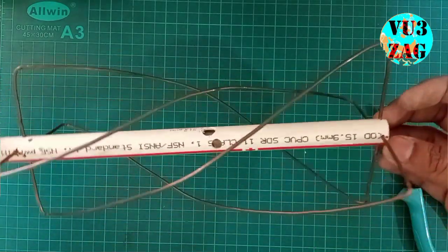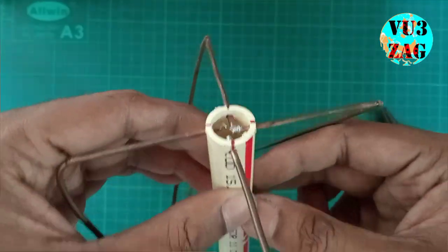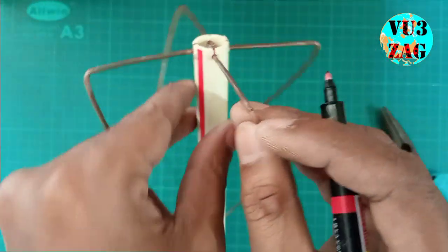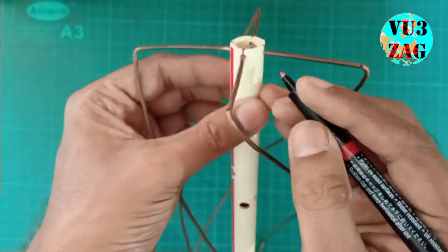Now let's solder a coaxial cable to this antenna. Before that, I will be marking the loops and giving the name A and B for loop 1, and C and D for loop 2.